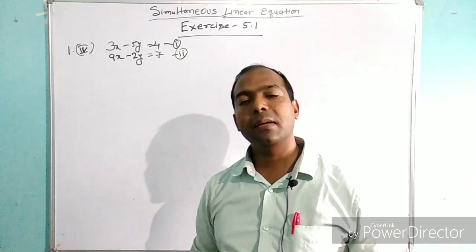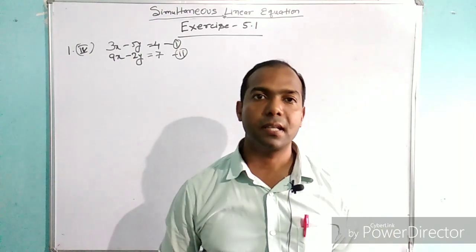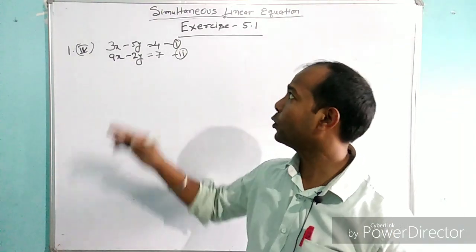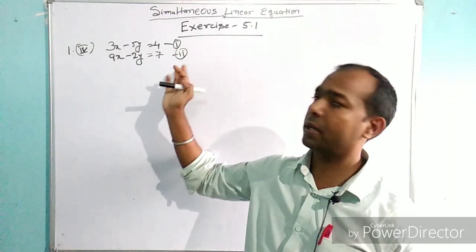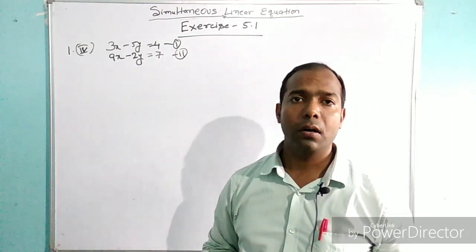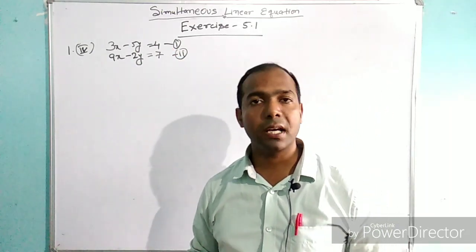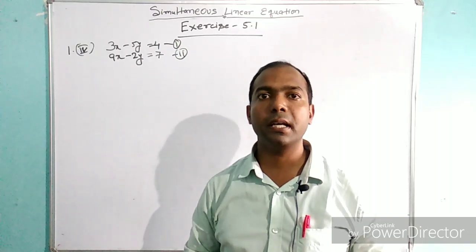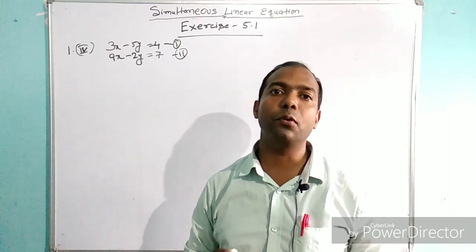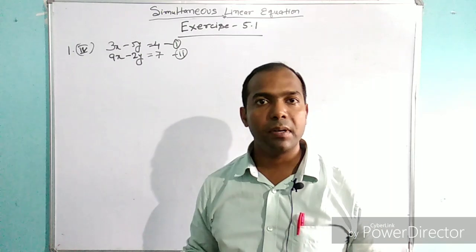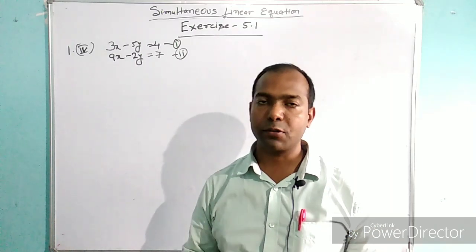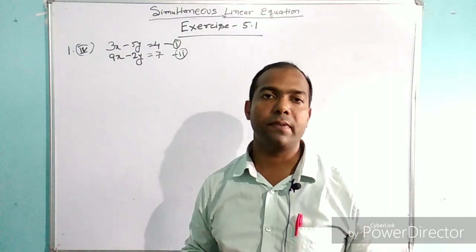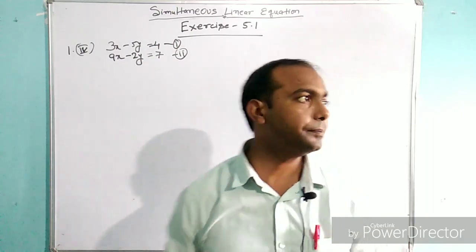So first, as we have already discussed, whenever we have two equations, we label them as equation 1 and equation 2. Then we find a temporary value for a variable, an actual value, and then another value. So let's start.